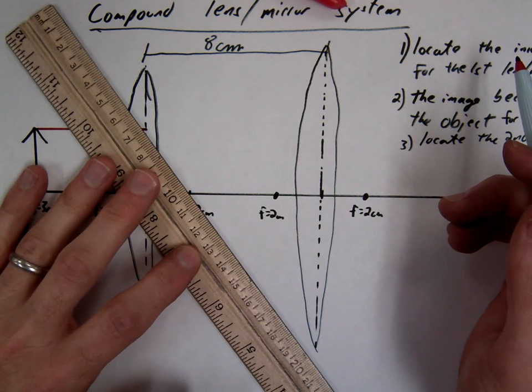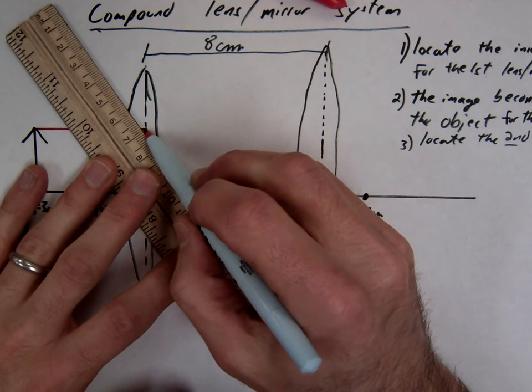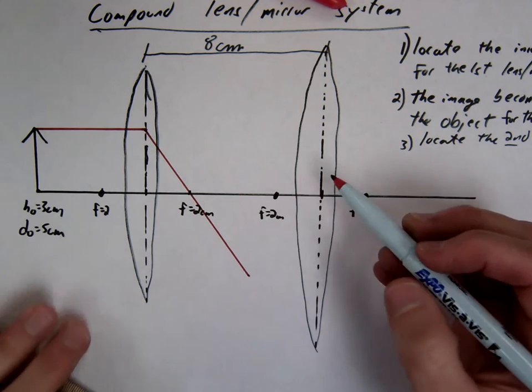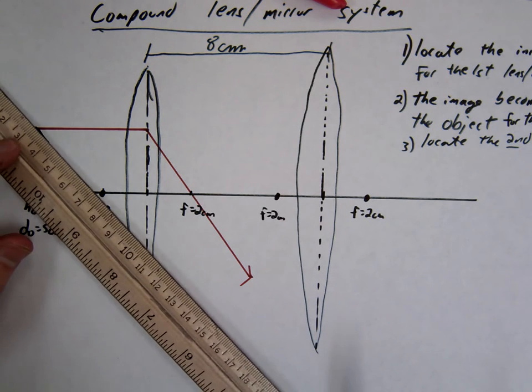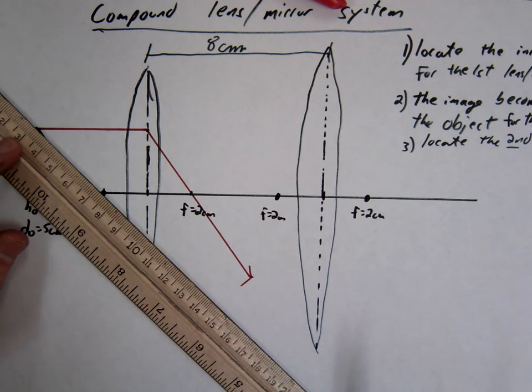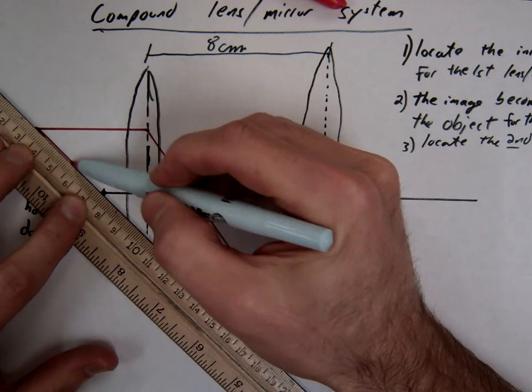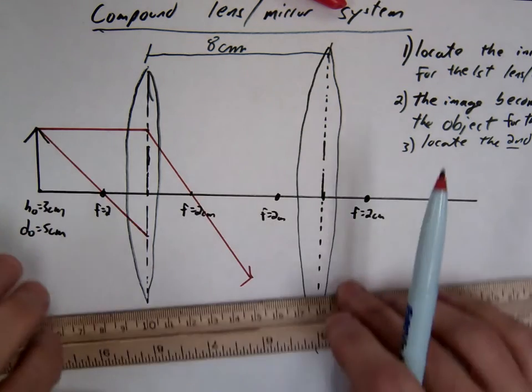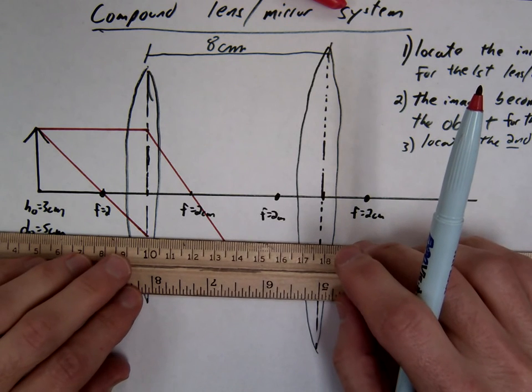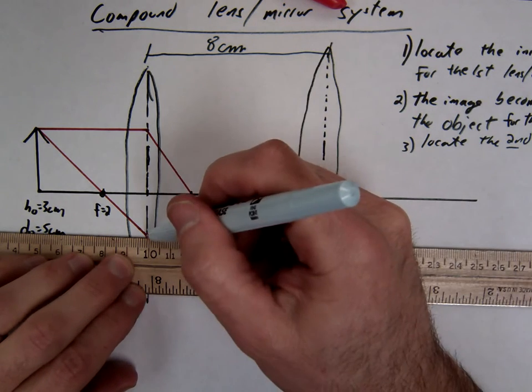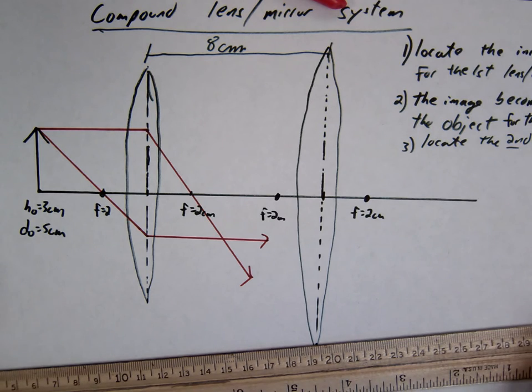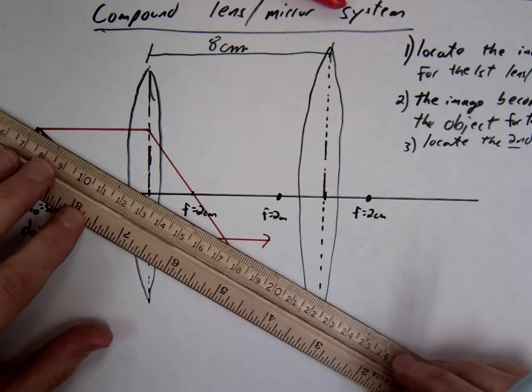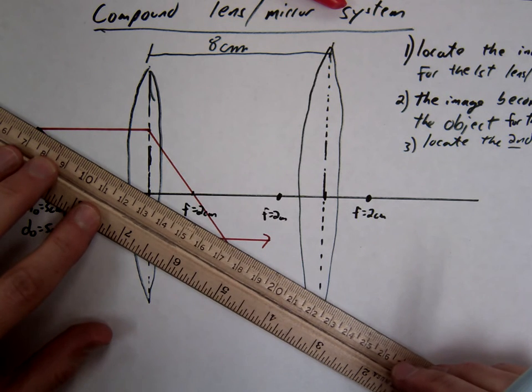So first beam is parallel and then focal. Remember these are converging lenses so your light should be going through the focal point. Second beam is focal and then parallel.